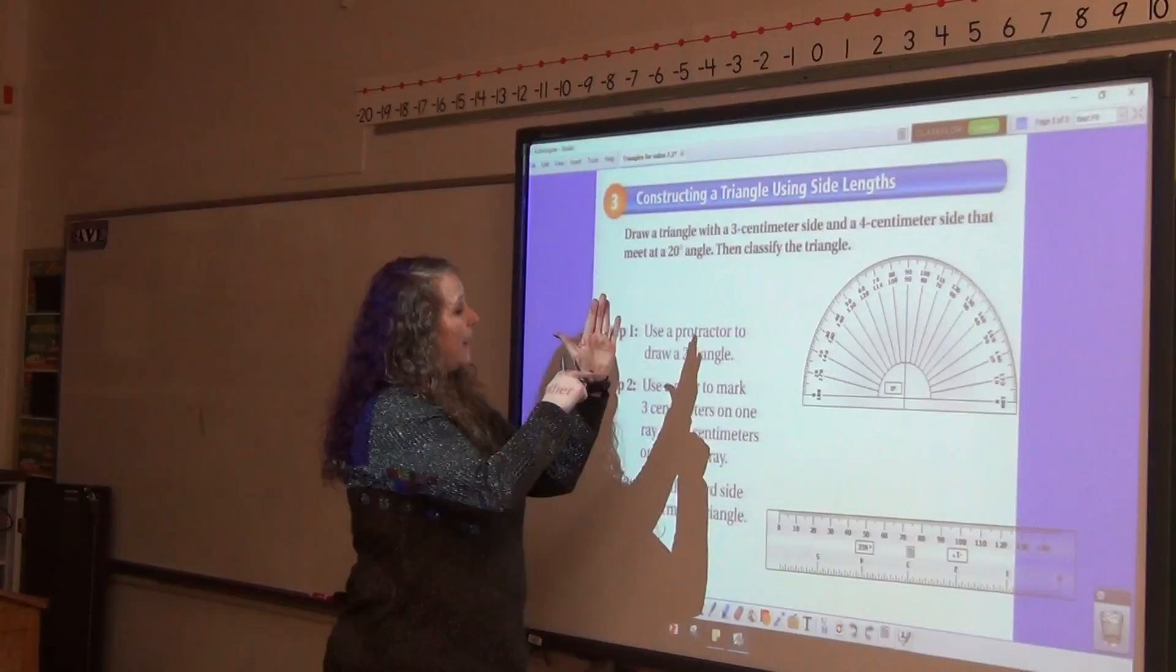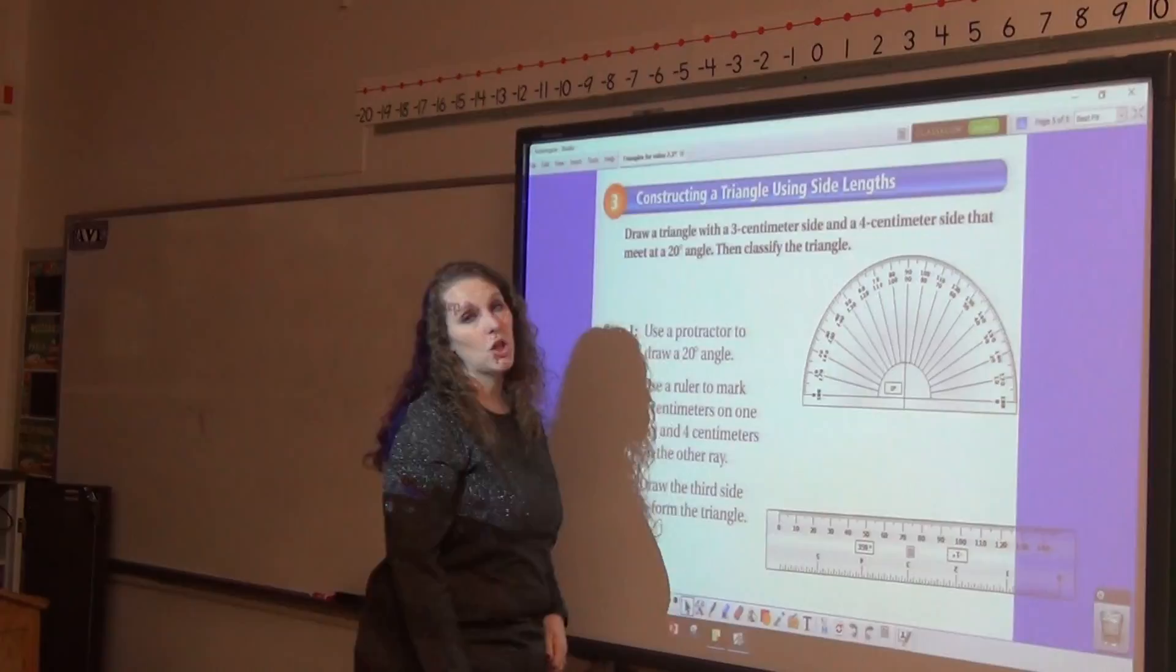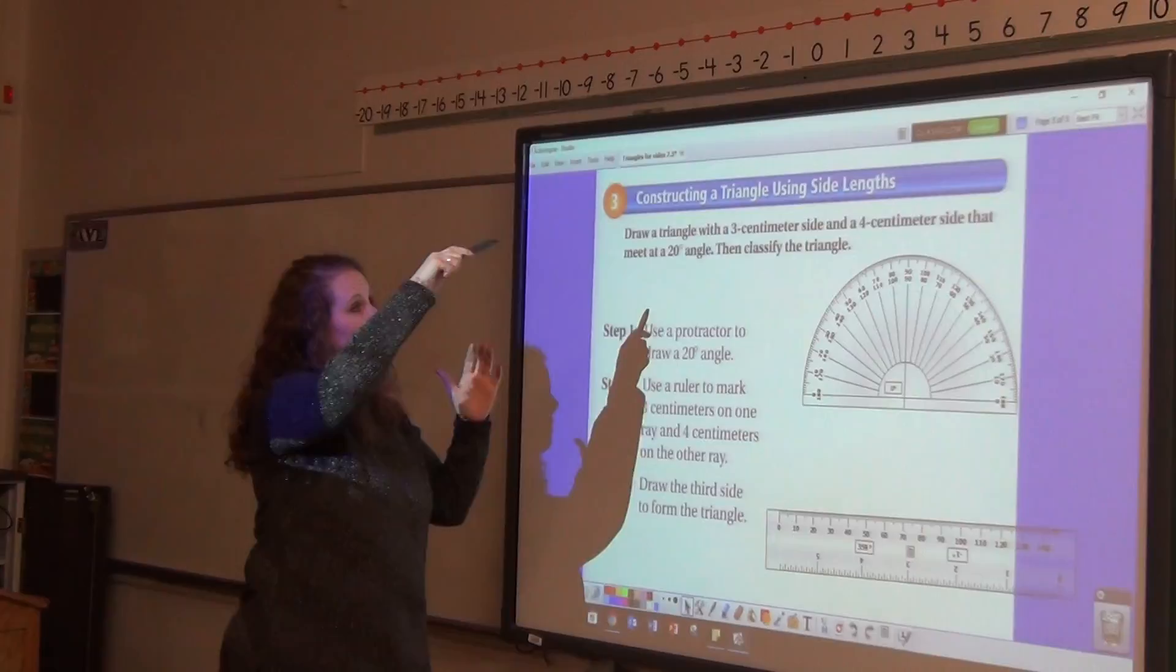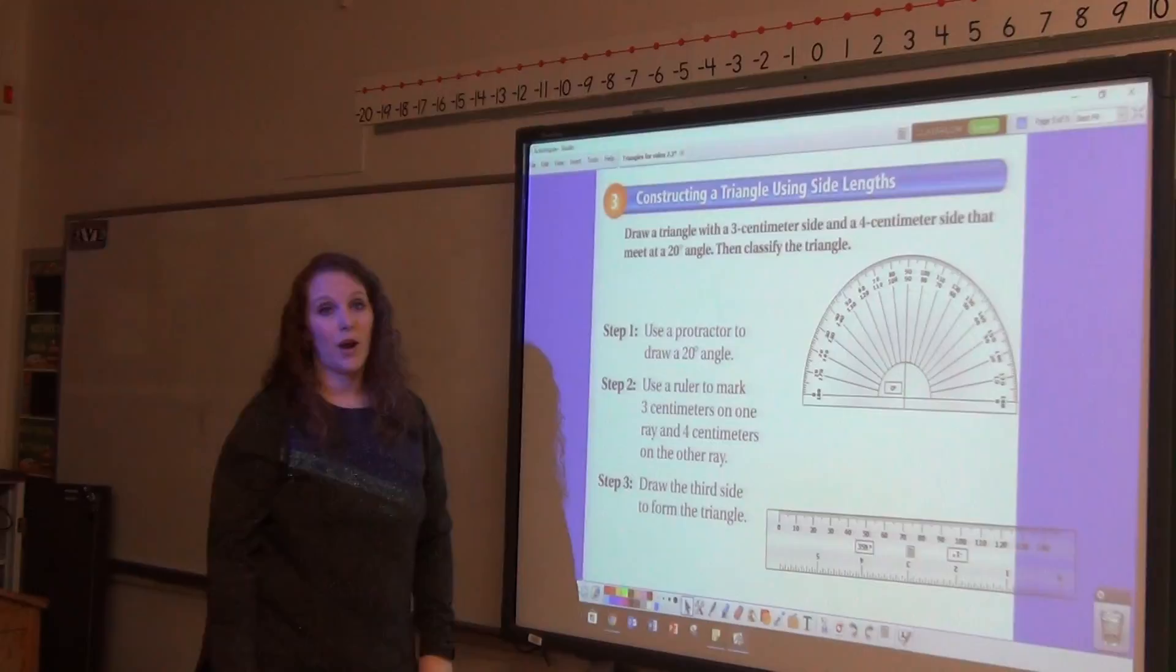From the vertex of your angle, draw a line that is 4 centimeters long. Then, it doesn't matter what the third side is, so you just connect your 3-centimeter and 4-centimeter sides to complete your triangle.